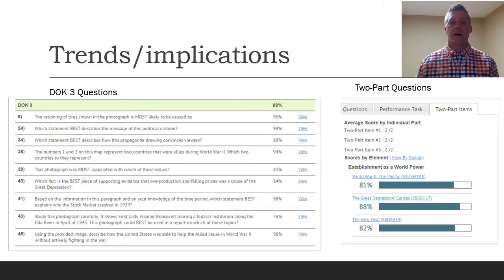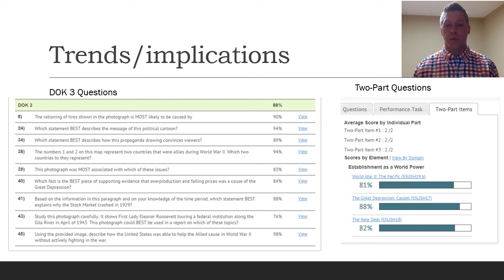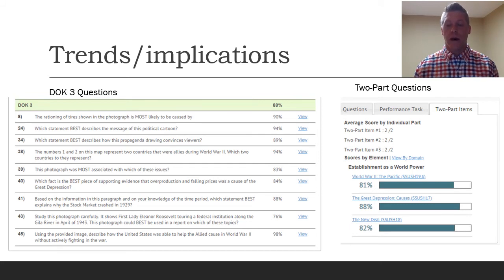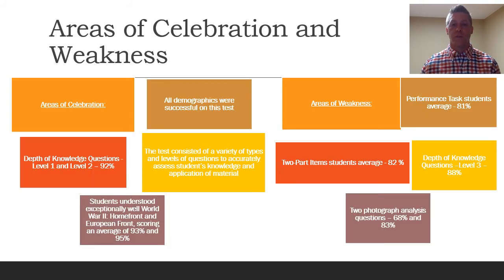Looking at trends and implications, the DOK level three questions came in at 88% for multiple choice assessments. The two-part items broke down by standard at 81% for the Pacific World War II information. Students had the home front, the European theater, and the Pacific theater — and the Pacific theater was the most difficult for students to grasp. That's an area we can focus on.